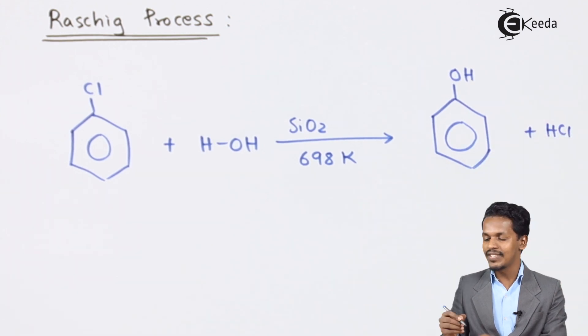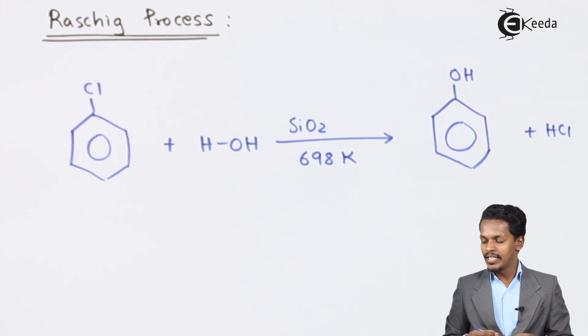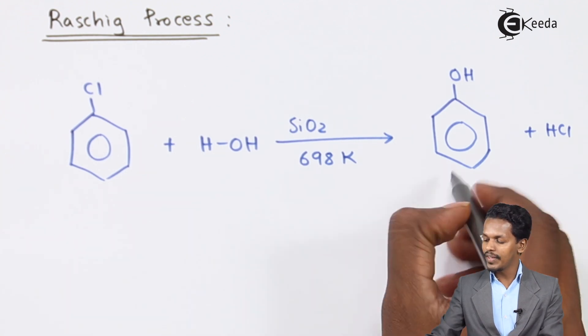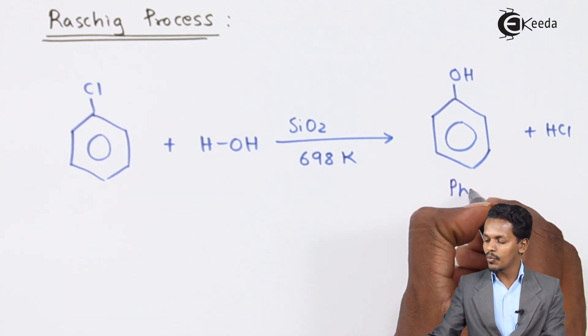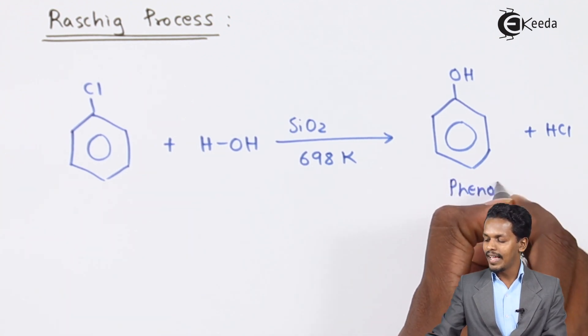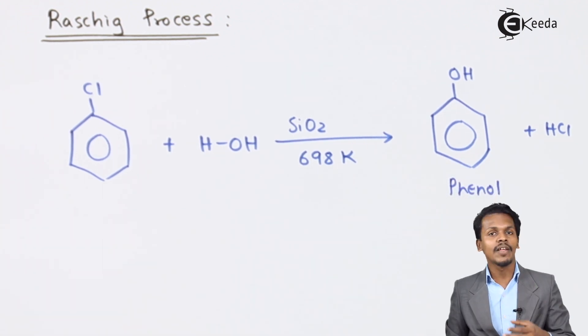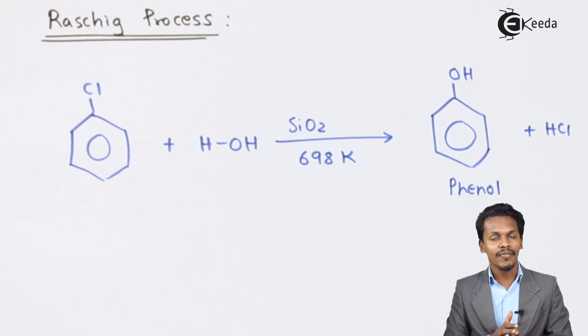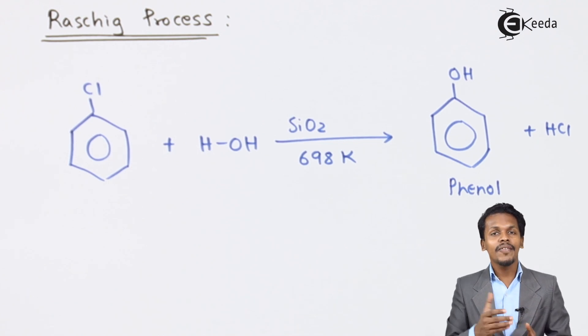As a result, we get a benzene ring with an OH group attached — that is, phenol — along with HCl as a byproduct. This is how phenol is obtained from chlorobenzene via the Raschig process. These were the two methods for preparing phenol from chlorobenzene.